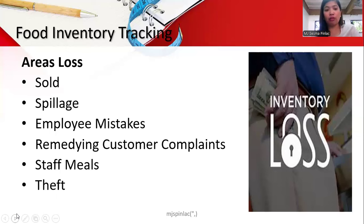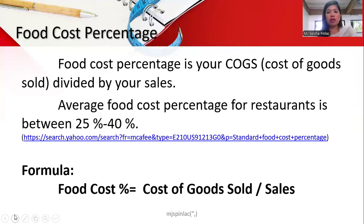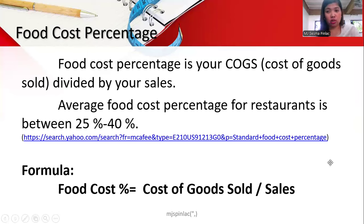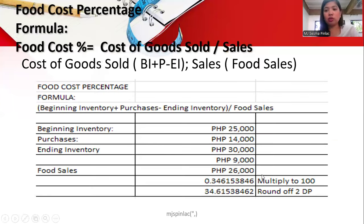In inventory management, it is important to ensure we are within the proper range of food cost percentage, which is from 25 to 40 percent. To compute the food cost percentage, we divide the cost of food sold by the amount of sales. To get the cost of food sold, we add the beginning inventory to purchases and then subtract the ending inventory.